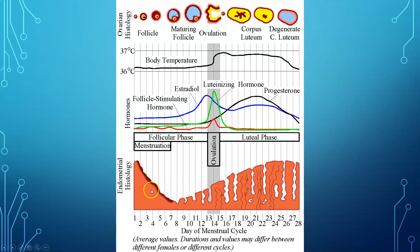Looking at the diagram: day one of menses — bleeding — typically lasts five days to possibly a week. FSH is active during this time, and LH rises, peaking at ovulation. Estradiol levels climb steadily as the follicle matures, with estrogen's role being to mature the follicle. Body temperature also peaks during ovulation, which can be tracked as a sign of ovulation. At the LH surge, the egg is released.